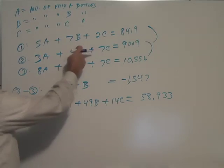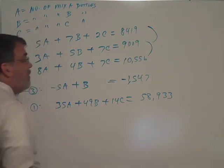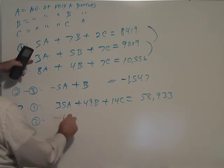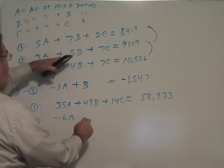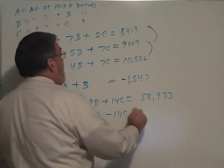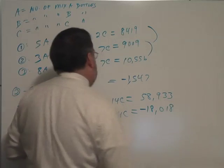And now we're going to multiply this second equation by negative 2 so that we can cancel off the positive 14C. So negative 2 times equation 2 will be minus 6A and then minus 10B minus 14C equals to, let's see, that would be negative 18,018.